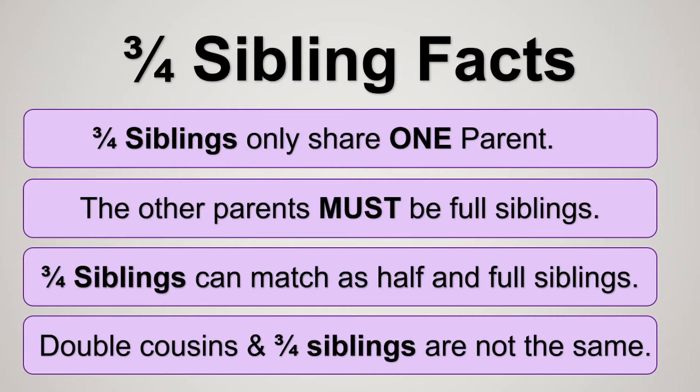Double cousins and three-quarter siblings are not the same. Whereas double cousins are, for instance, two brothers marrying two sisters, in this case it would be, for example, two brothers having children with one female.